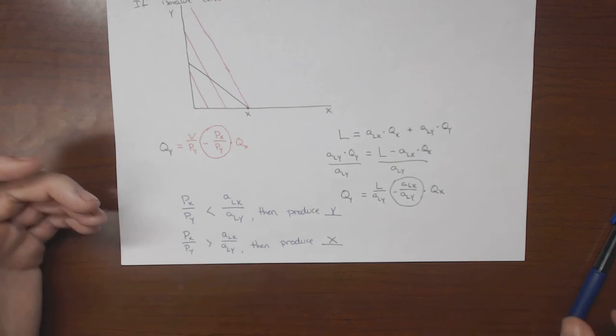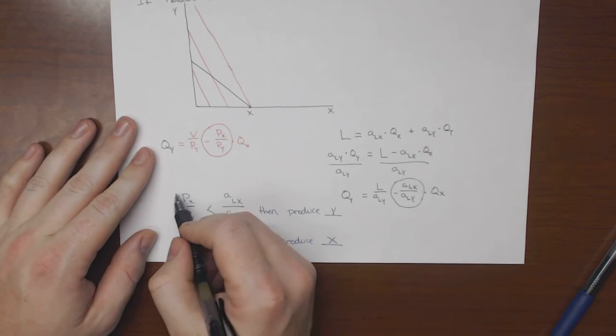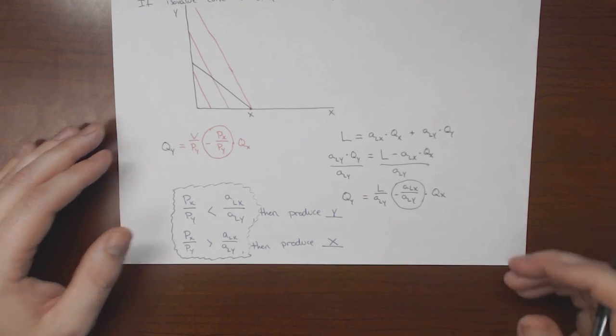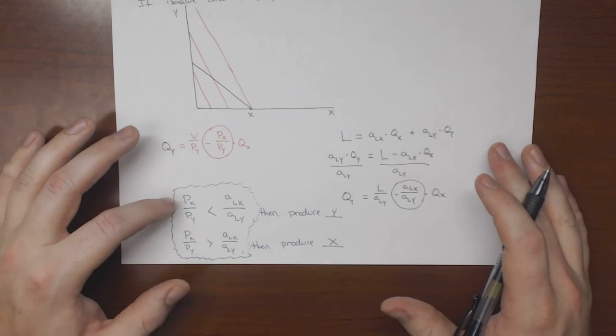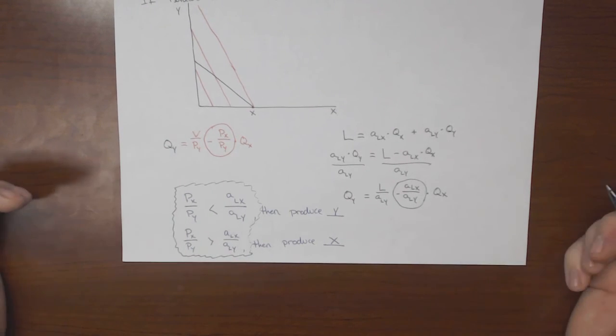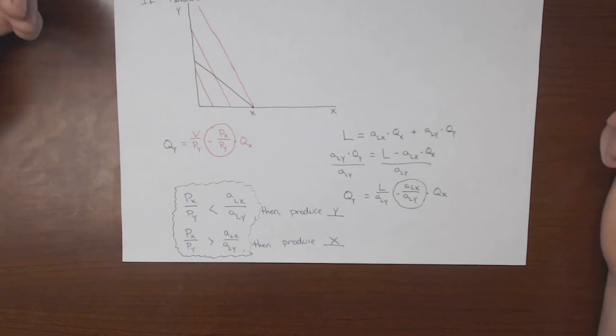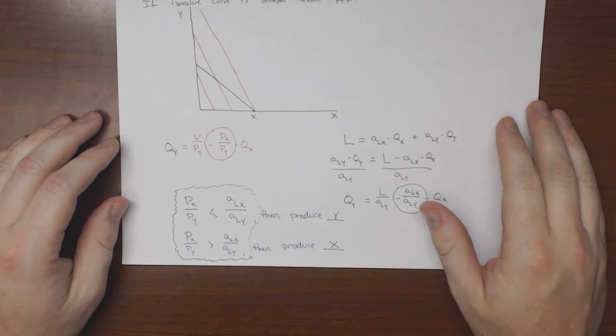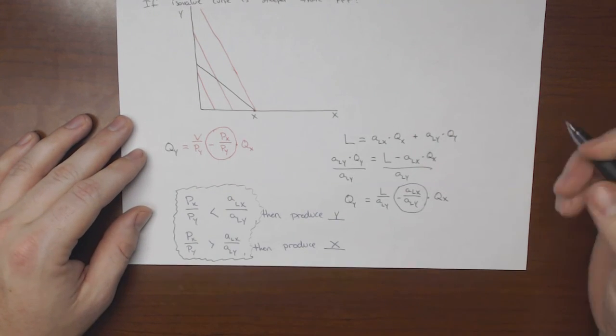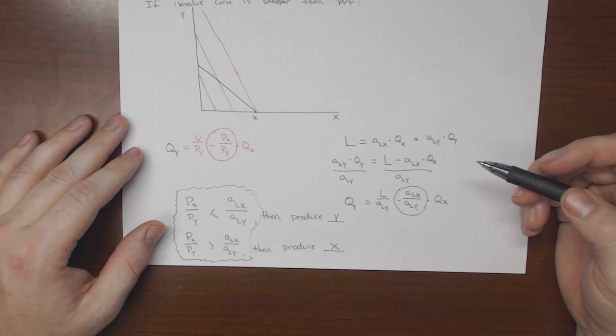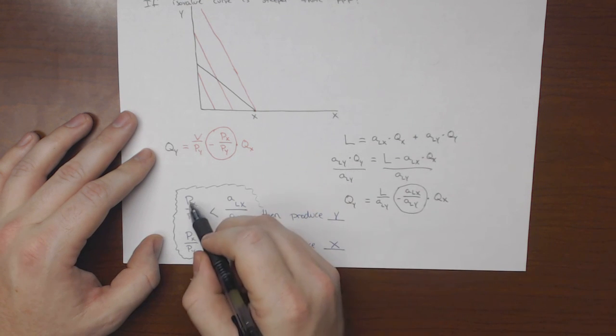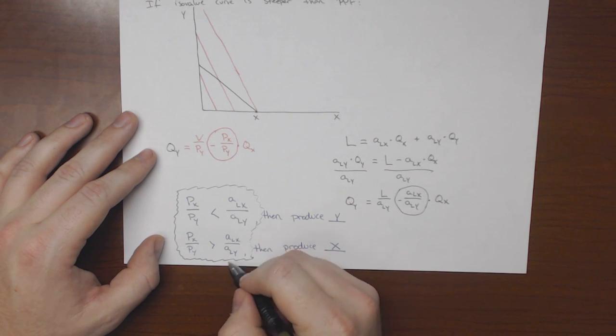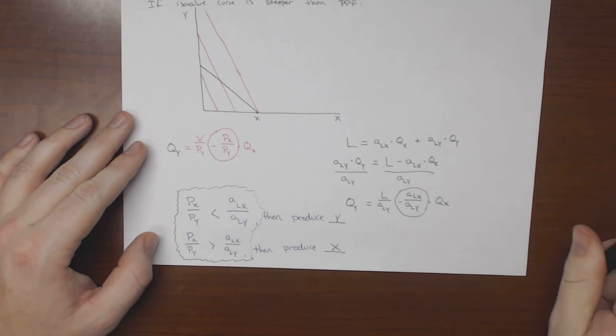And so that would be the sort of intuition behind these inequalities here. So these tend to be tricky for people to work through in their heads, but if you break it down and see what it's saying and how we determined or how we came up with these fractions and everything, then we can see the intuition behind it and we can understand sort of what's going on. So hopefully this will provide you with some background so that you can understand the intuition behind what's going on when we talk about the relative price and the marginal rates of transformation. So if the marginal rate of transformation is greater than the relative price, then produce y. If the marginal rate of transformation is less than the relative price, produce x.